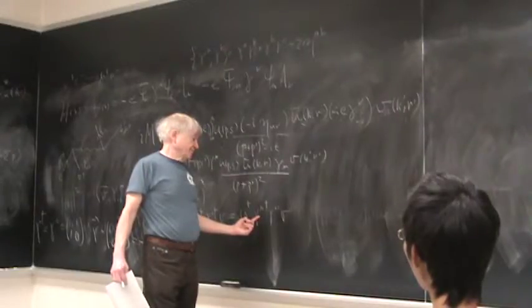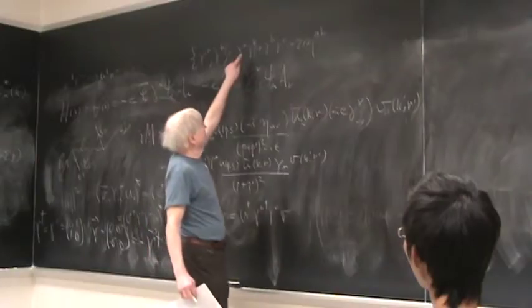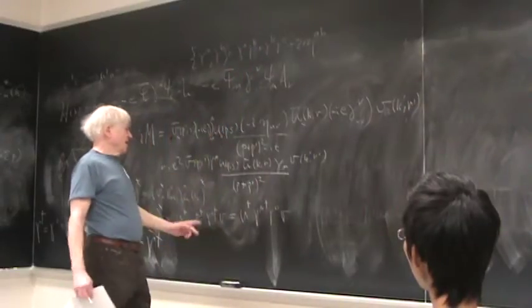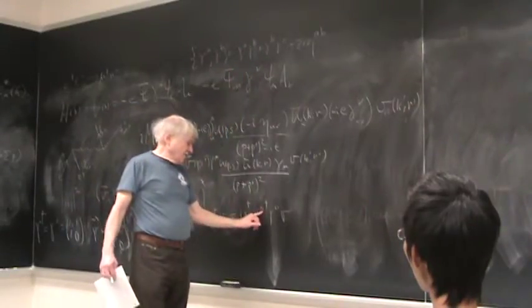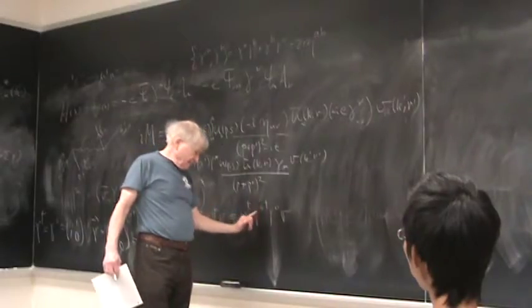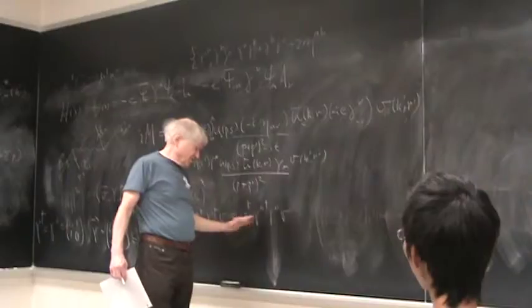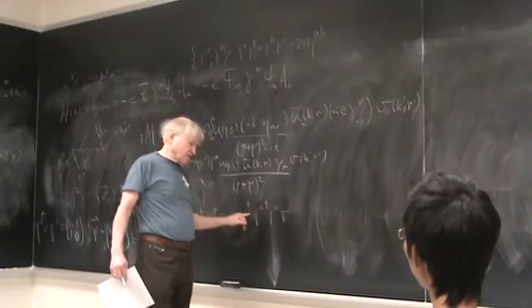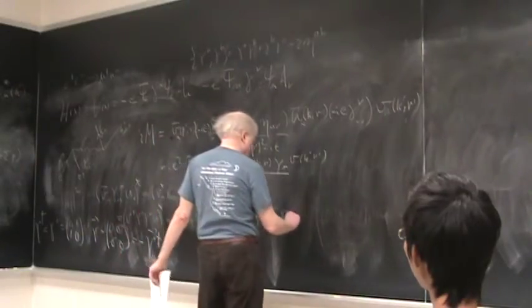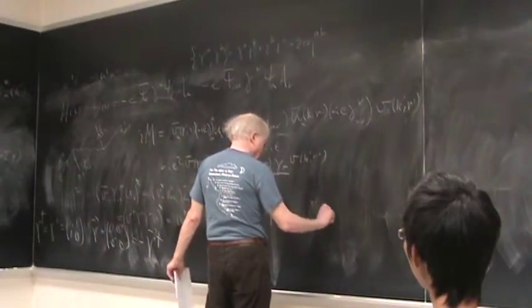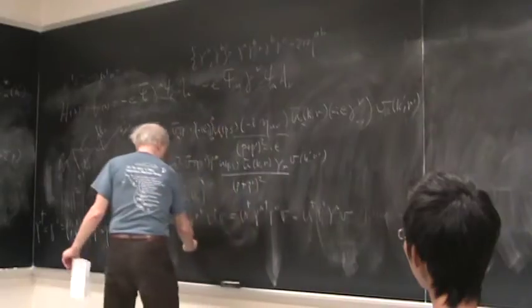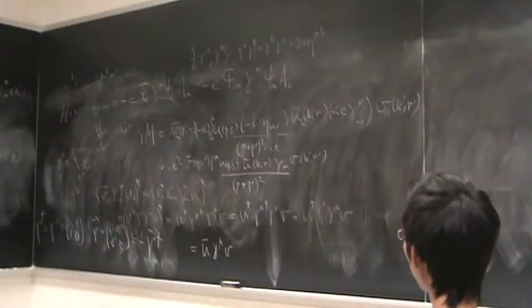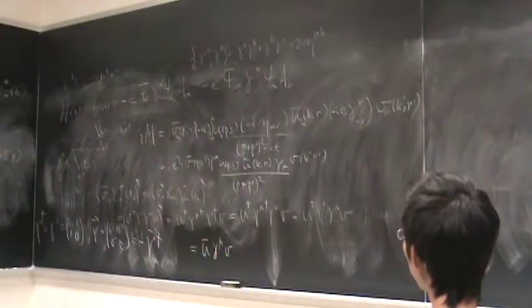And so that means that γ⁰ commutes with γ⁰. Obviously anything commutes with itself. But γ^i anticommutes with γ⁰ because if you have an i and a 0 here you get zero on the right-hand side.